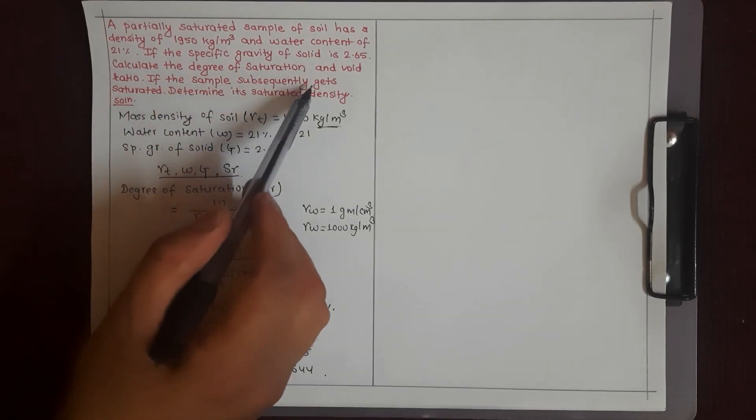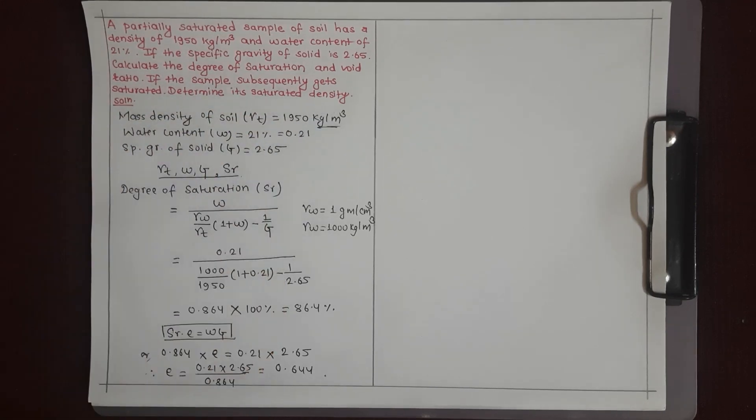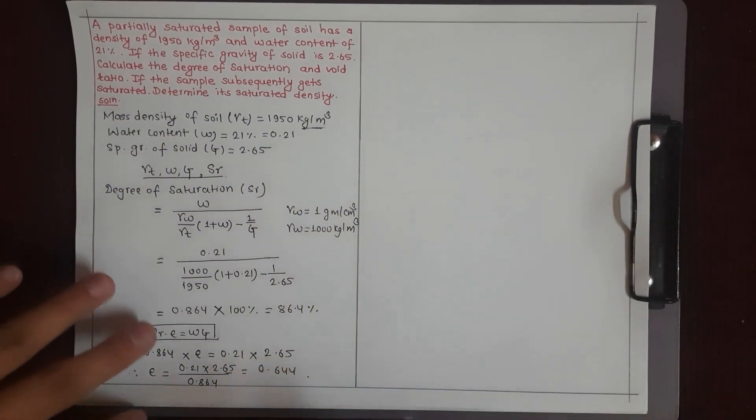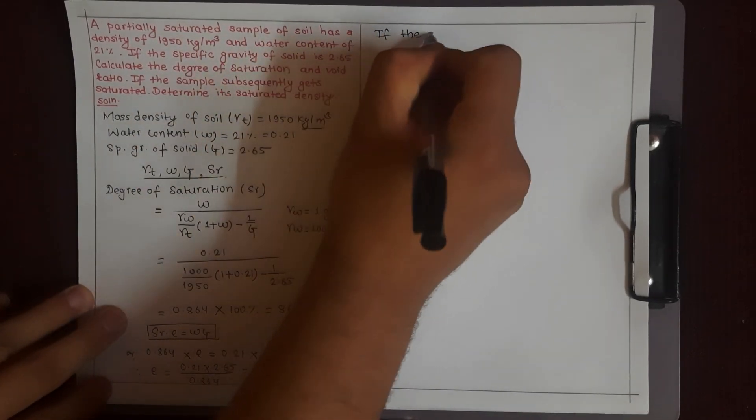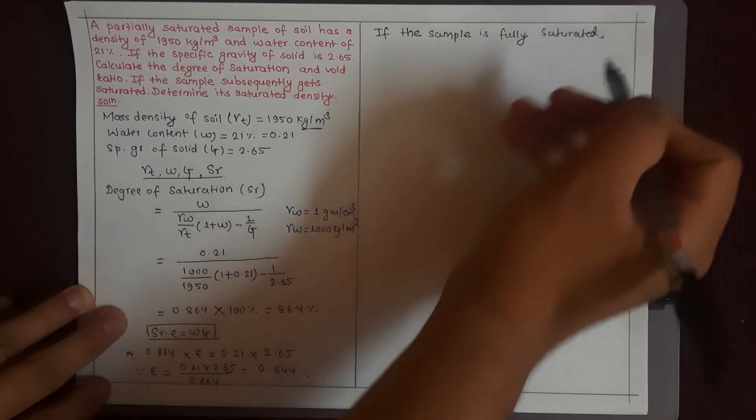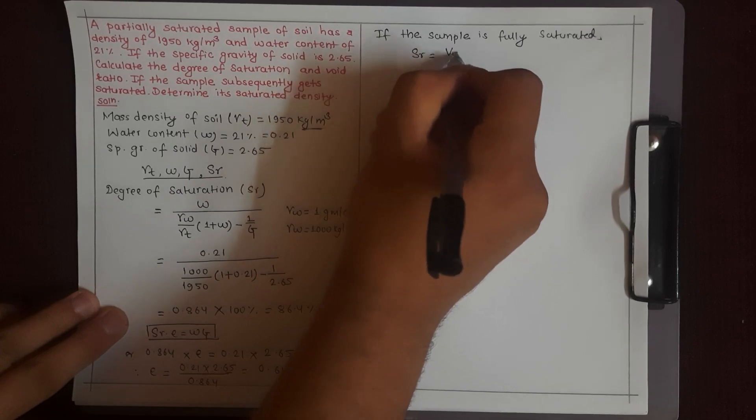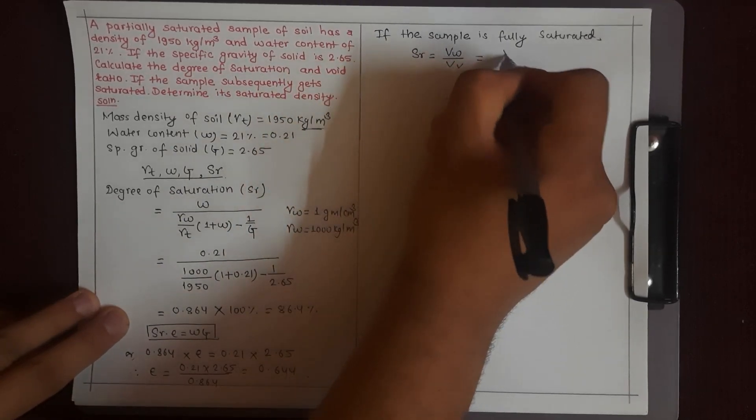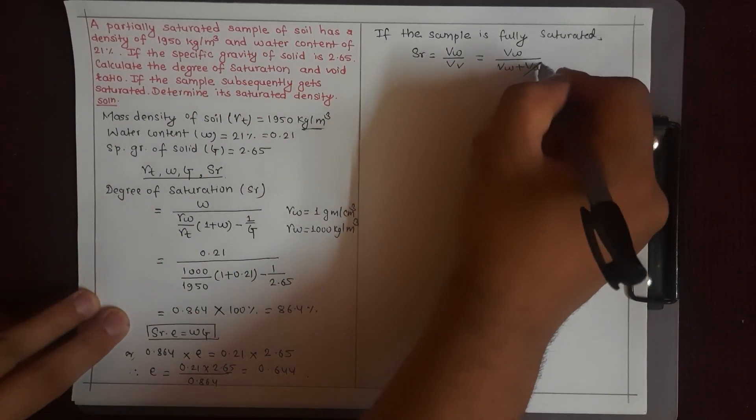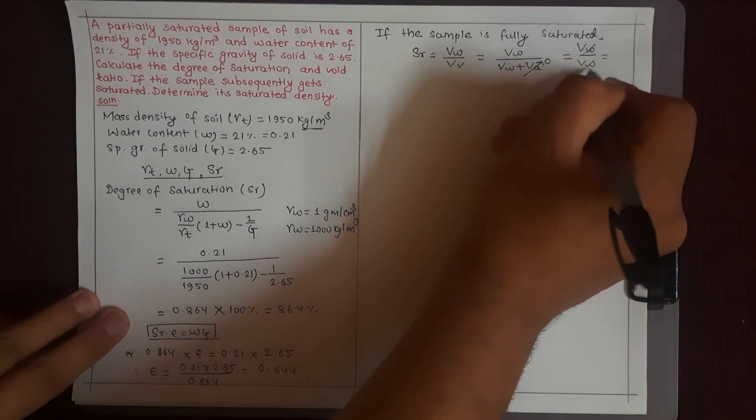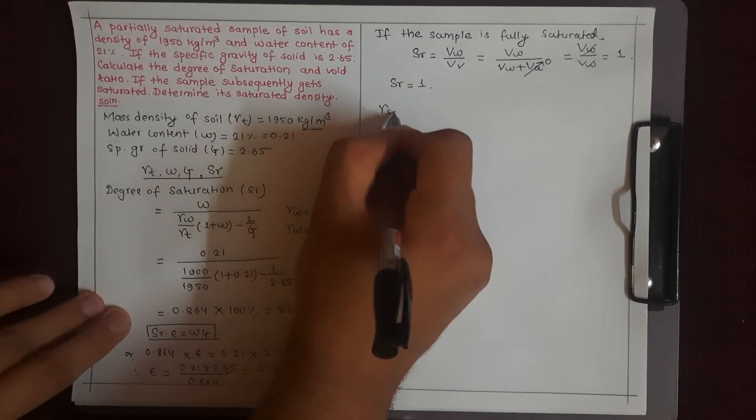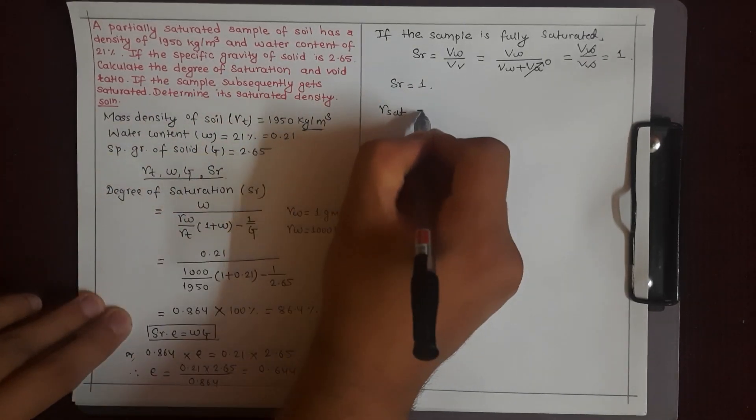If the sample subsequently gets saturated, it becomes fully saturated. The degree of saturation equals volume of water by volume of voids. When fully saturated, this equals 1. We need to find gamma sat, the saturated density.